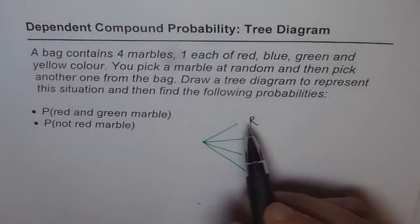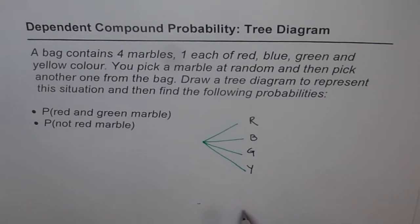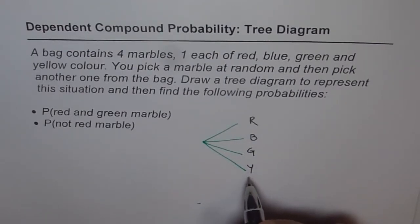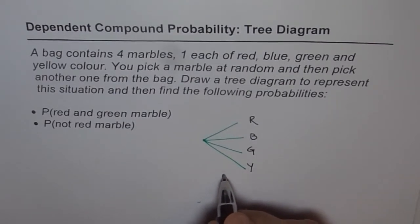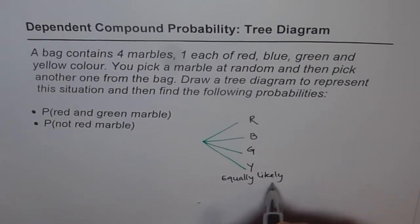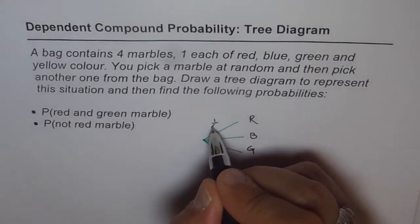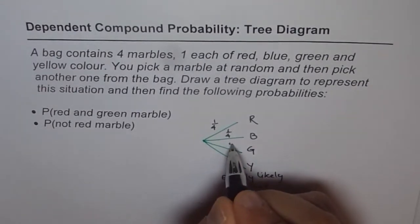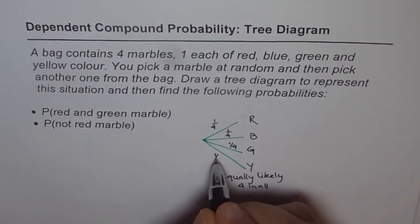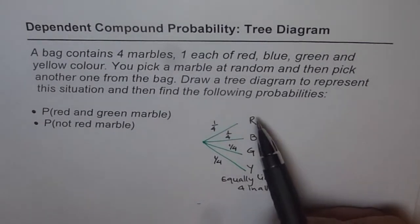What is the probability of getting red, blue, green, or yellow? Since there are four equally likely outcomes, the chances of getting any one of them is one out of four. So the probability of red is 1/4, blue is 1/4, green is 1/4, and yellow is 1/4. That is for the first draw.